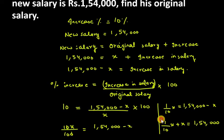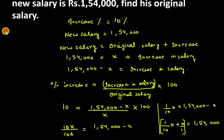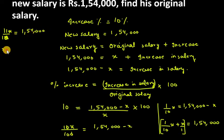How will we get it? We need to take the LCM of these two terms. When you take the LCM, you will get 11X over 10. So, 11X over 10 equals 154,000. The 10 will go to the other side multiplying, and 11 will come to the bottom. So, X equals 154,000 into 10 over 11.